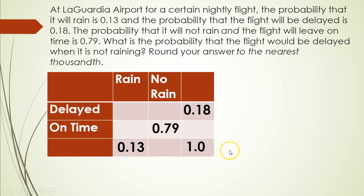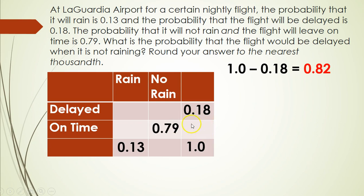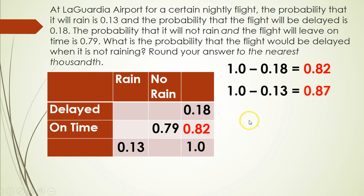The first thing I'm going to do is subtract 0.18 from 1 to get the on-time total — that's 0.82. Then I do the same thing for the not-raining column: subtract 0.13 from 1.0, which gives me 0.87.